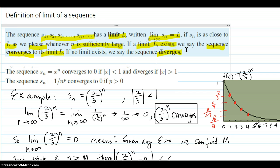Now we have some rules here. The sequence x to the n converges to 0 if x in absolute value is less than 1, and diverges if x is greater than 1. Also, the sequence Sn equals 1 over n to a power converges to 0 if p is greater than 0. So let's see examples of those.